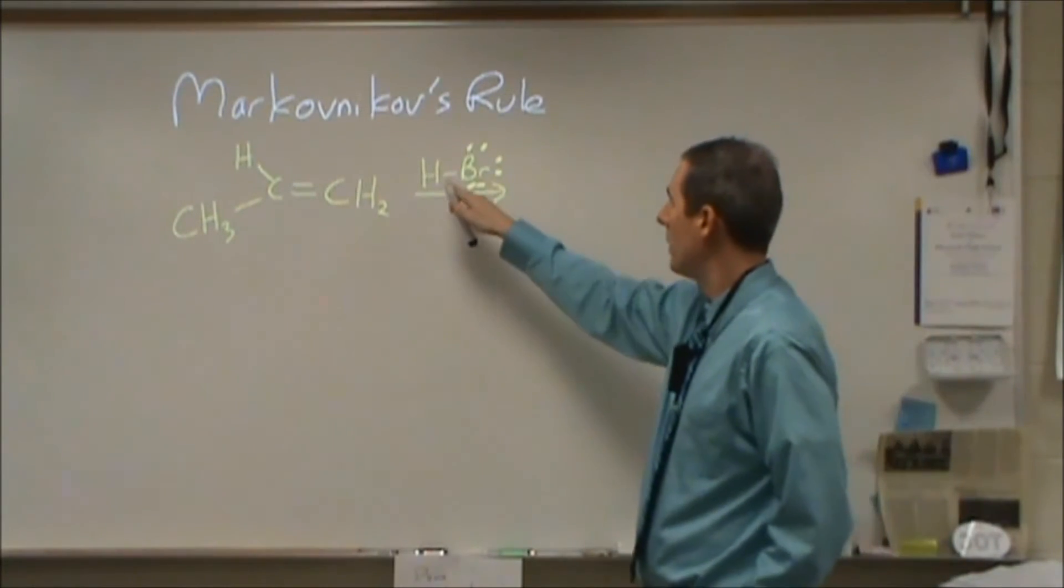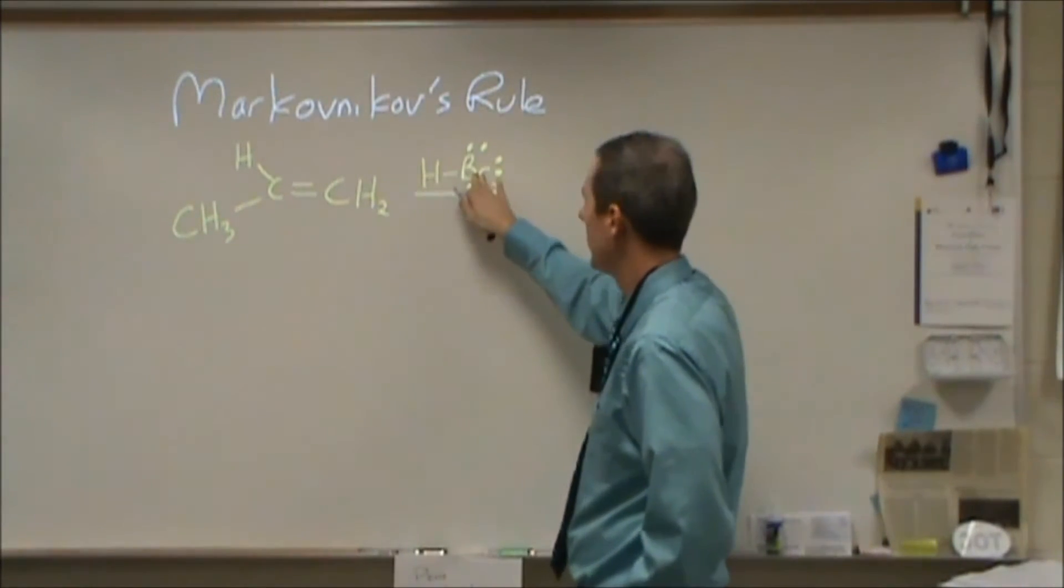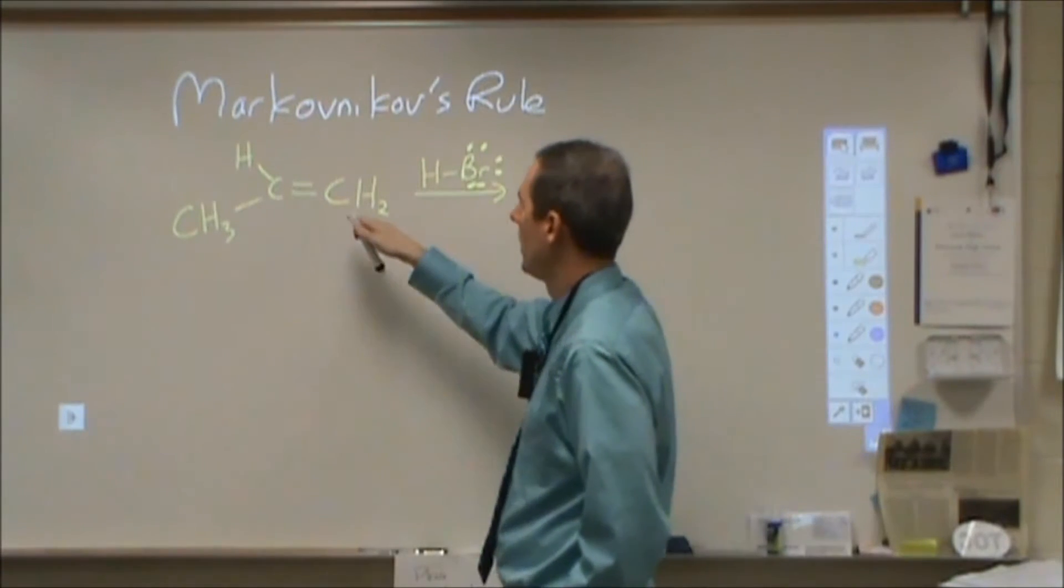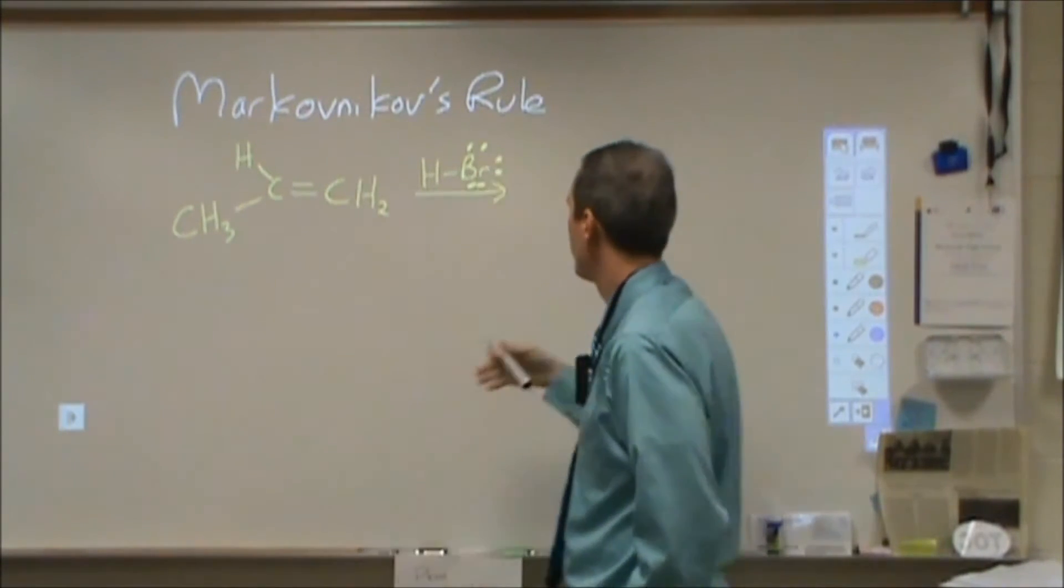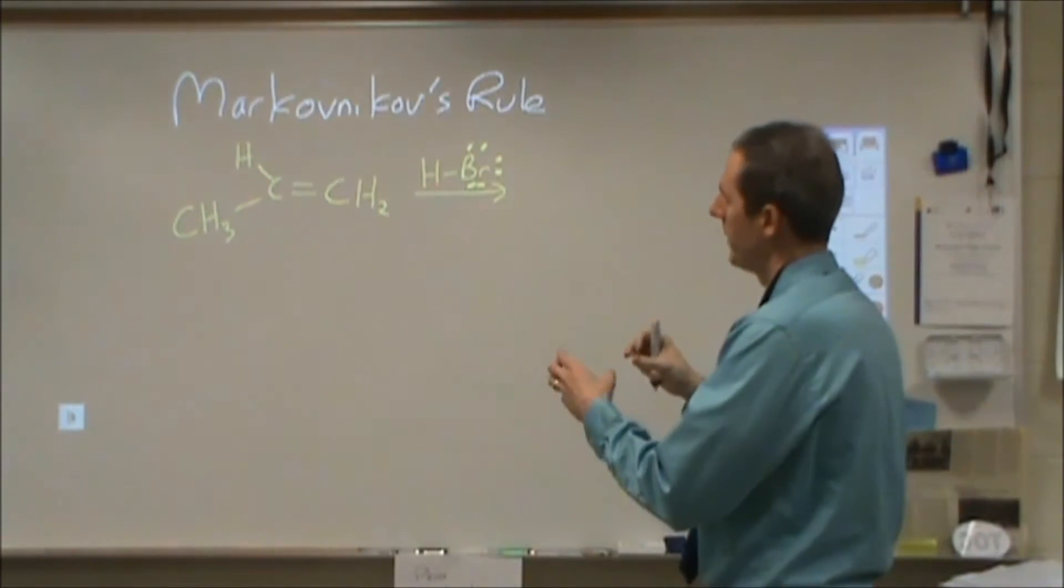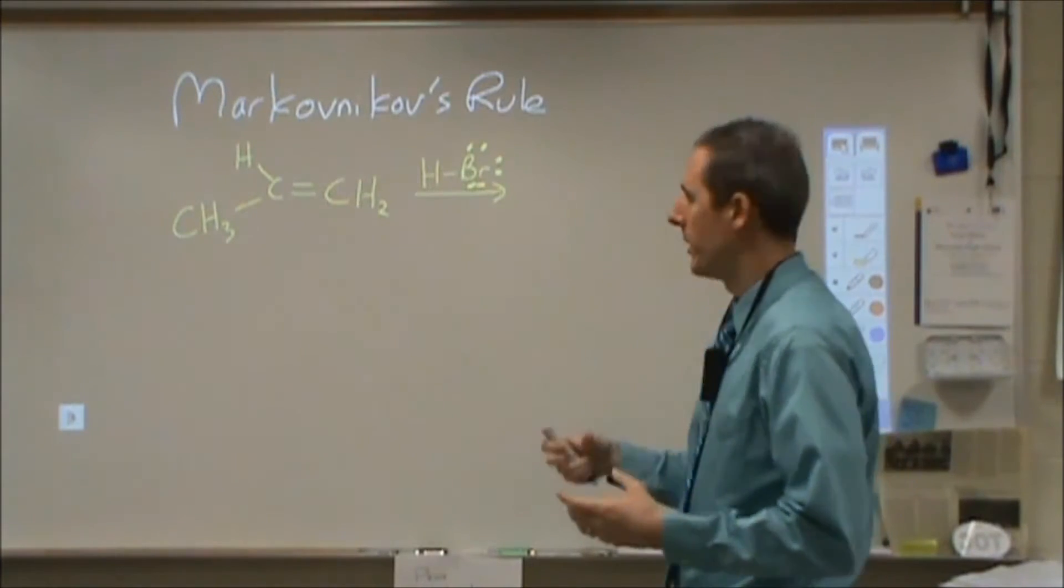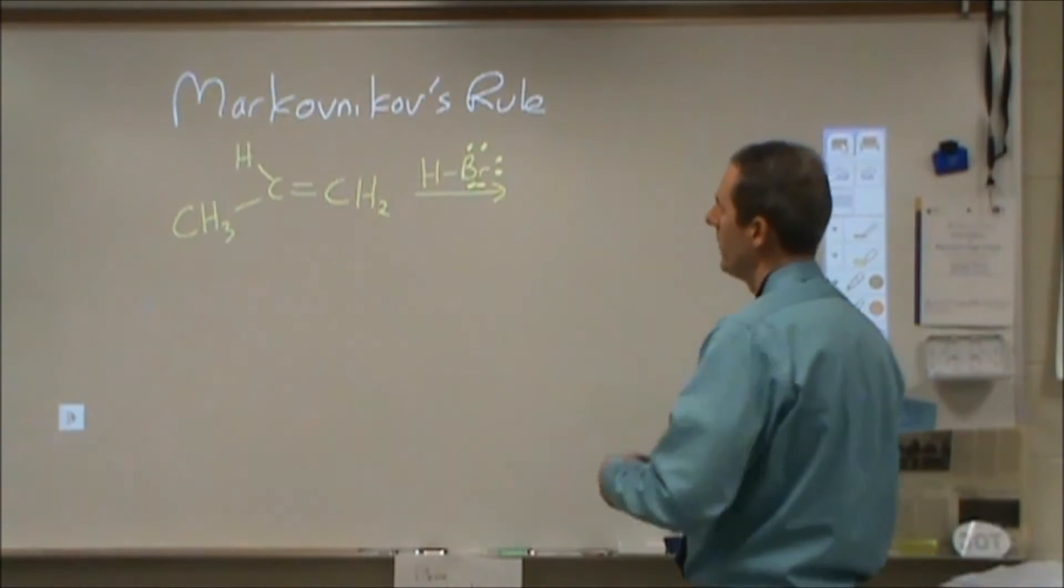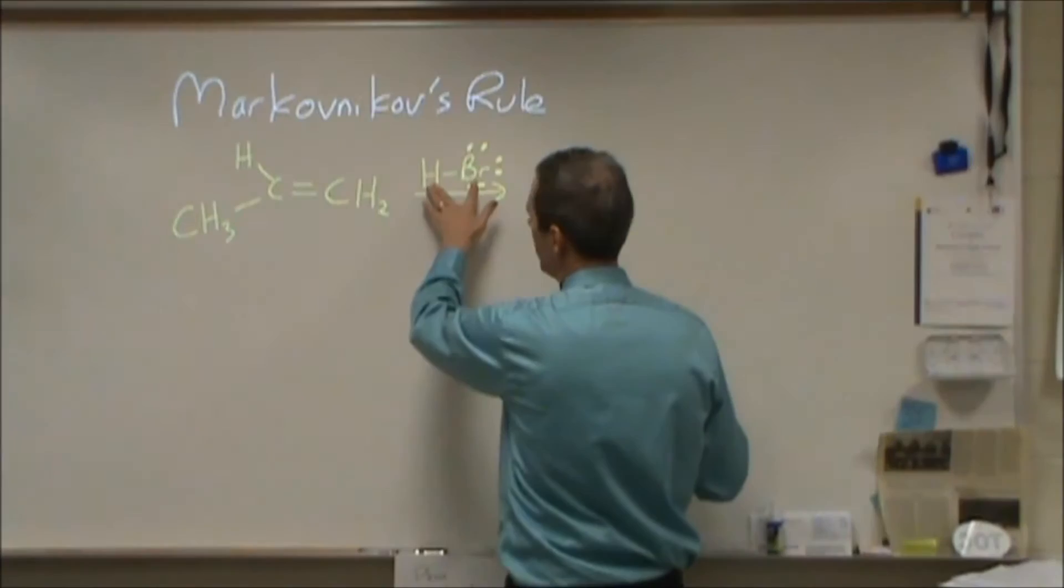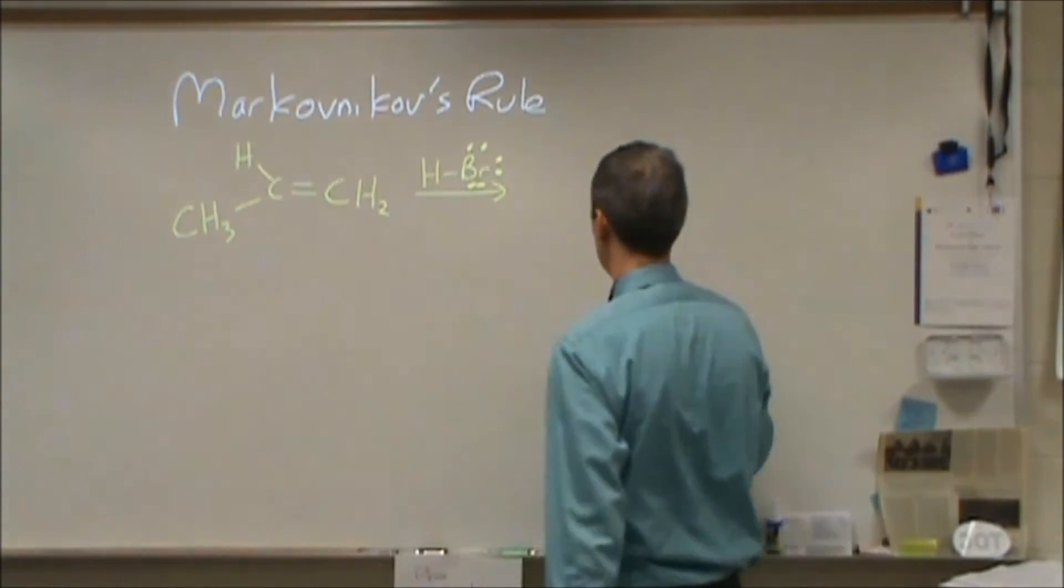We're going to go through the addition of a halogen-based acid to an alkene. This is not a symmetrical problem, so we have a decision to make about the placement of these two things along the double bond.